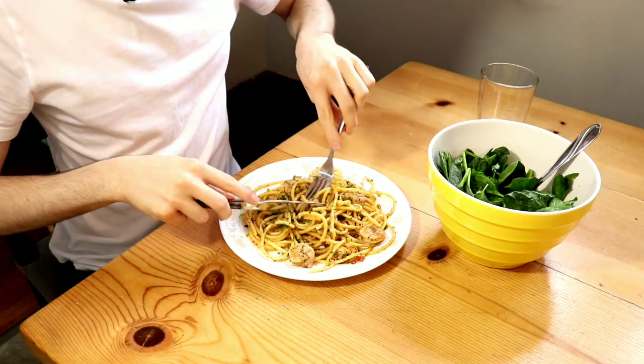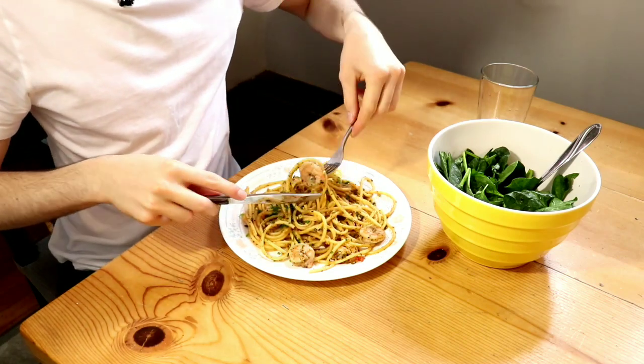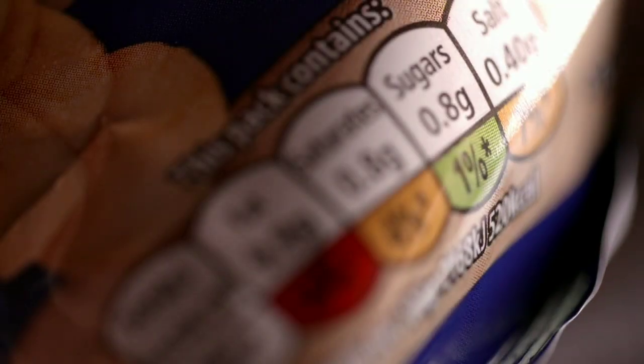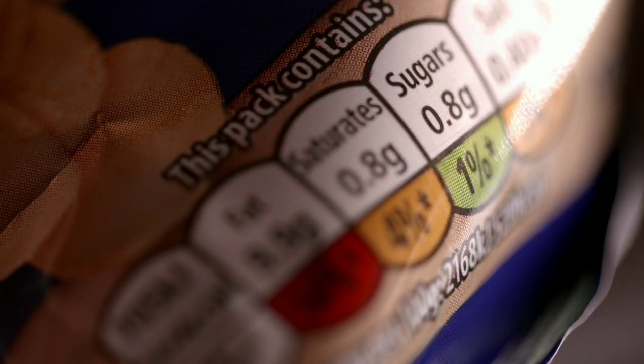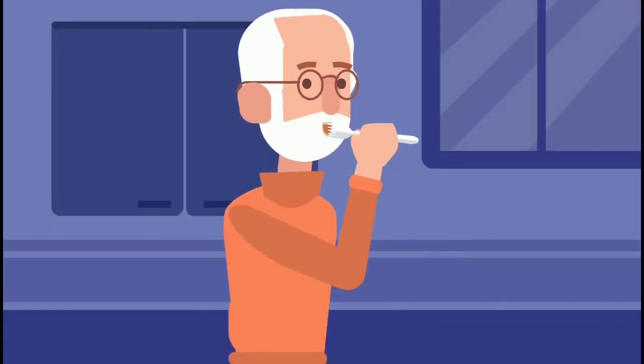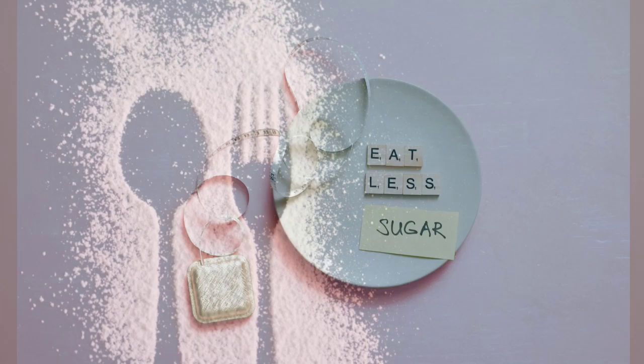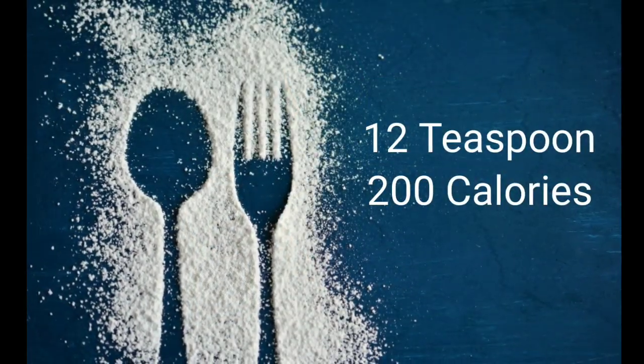Chances are you already know that eating too much sugar is not good for you, yet you are probably still overdoing it. Americans take an average of about 270 calories of sugar each day, that's about 17 teaspoons a day, compared to the recommended limits of about 12 teaspoons per day, or 200 calories.